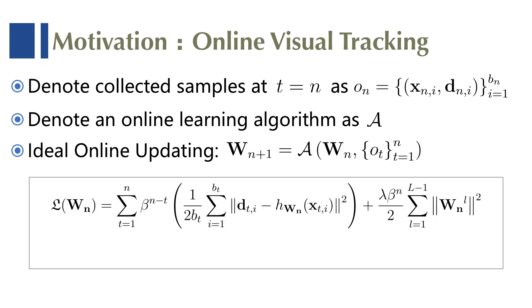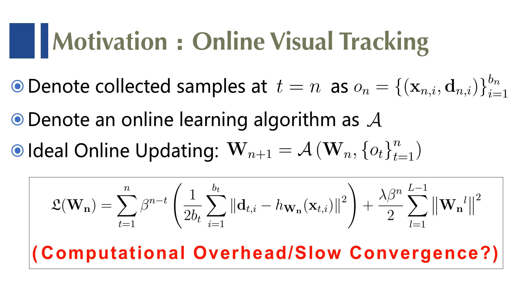That is because the straightforward way of incorporating memory in visual tracking will encounter significant computational overhead and slow convergence, which prohibits high tracking speeds.